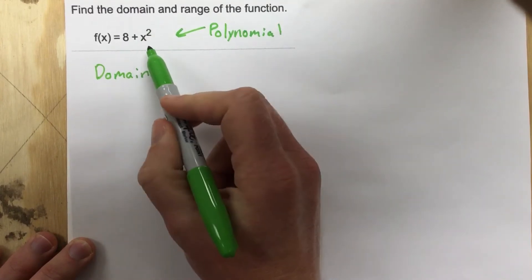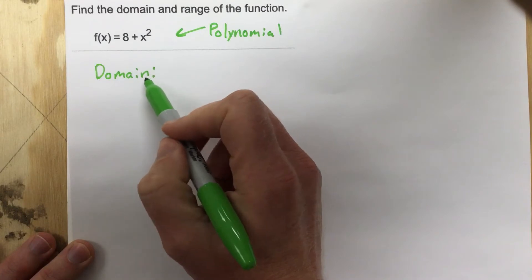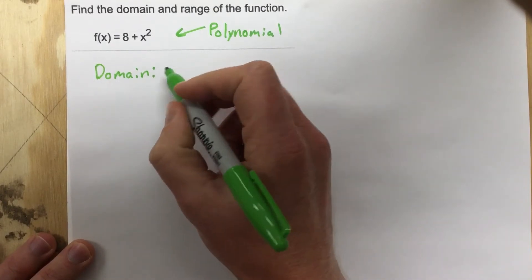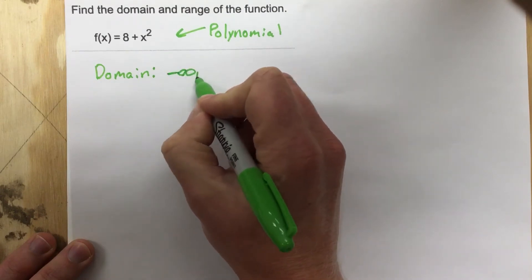Because it's a polynomial, I know that any polynomial is going to have a domain that is infinite, basically all real numbers. So I'm going to have a domain that is negative infinity to infinity.